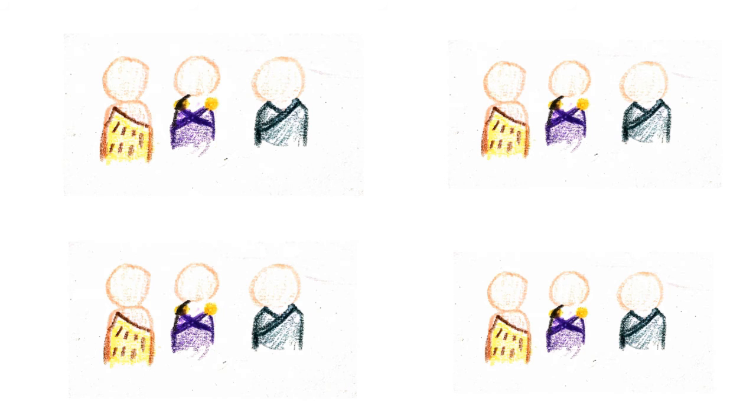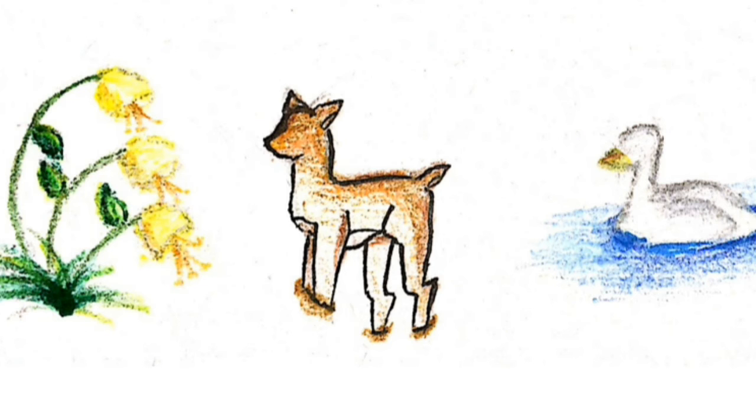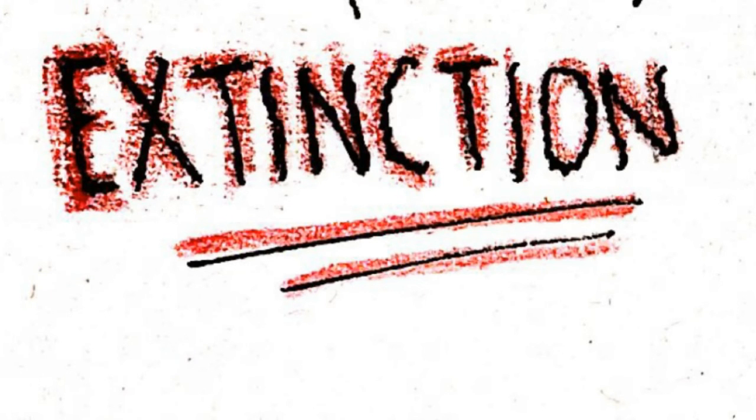Based on population numbers required to maintain genetic viability, it is estimated that as many as 30% of plant and animal species may become extinct within the next 100 years. Habitat destruction is a leading cause of species extinction today.